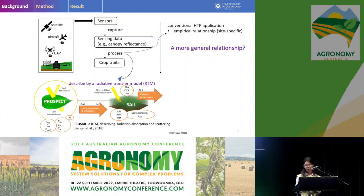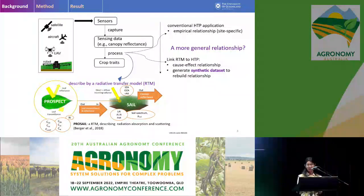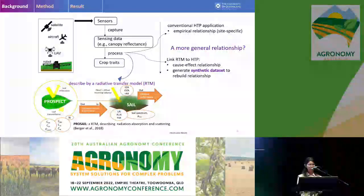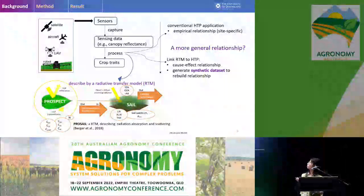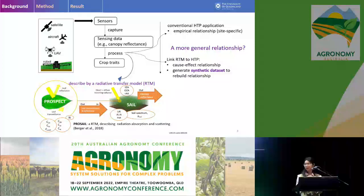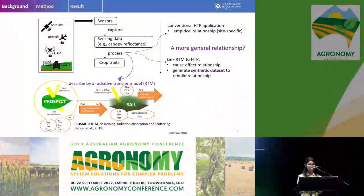Fortunately, the process from sensing data to crop traits can be described using the radiative transfer model (RTM). So if we integrate an RTM into high-throughput phenotyping, we can create a more general relationship in two ways. The first way is to use the trait-reflectance relationship built into the RTM to back-calculate crop traits from the canopy reflectance data. The second way is to use the RTM to simulate a synthetic dataset and then rebuild a relationship from this synthetic dataset.